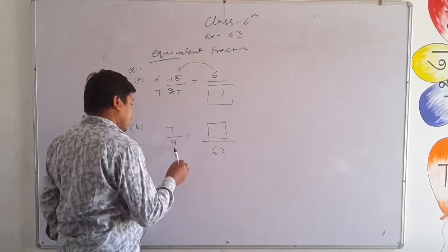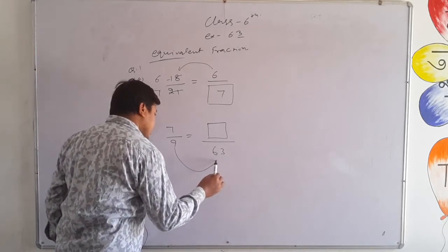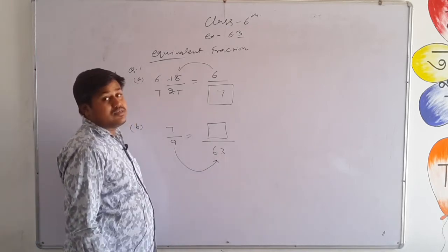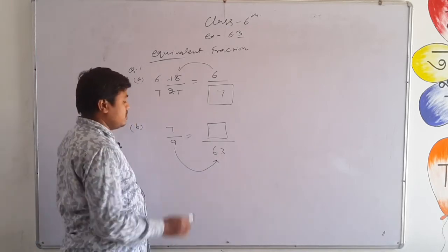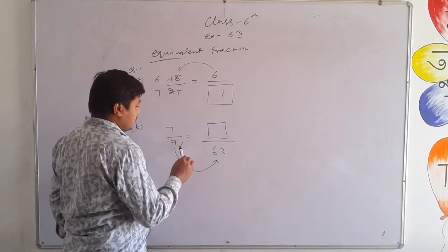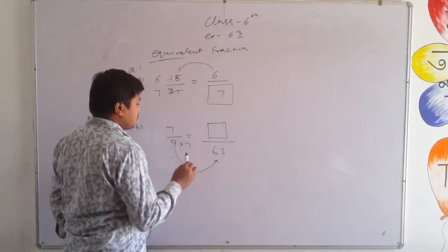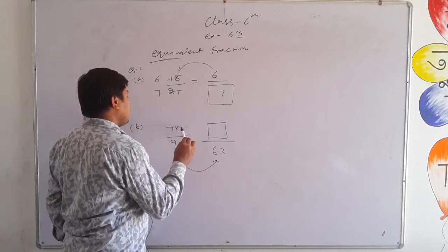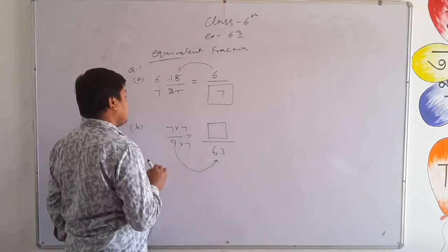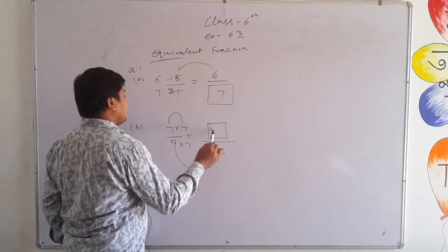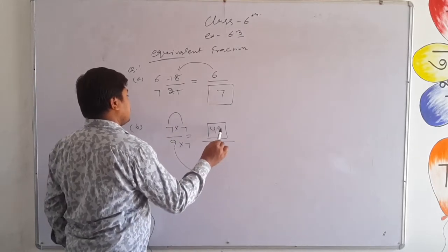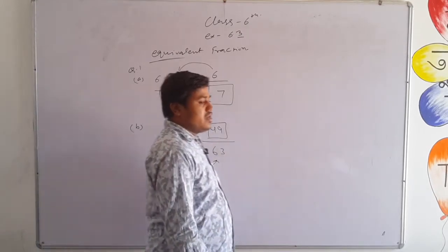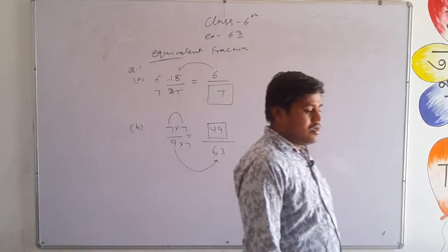Part B: 7 upon 9 equals □ upon 63. In 9's table, 63 comes at position 7 — so we multiplied the denominator by 7. Since we multiplied the bottom by 7, we must multiply the top by 7 as well — otherwise the top would be unhappy! 7 times 7 is 49. So the answer is 49 upon 63. This is quite an easy question.